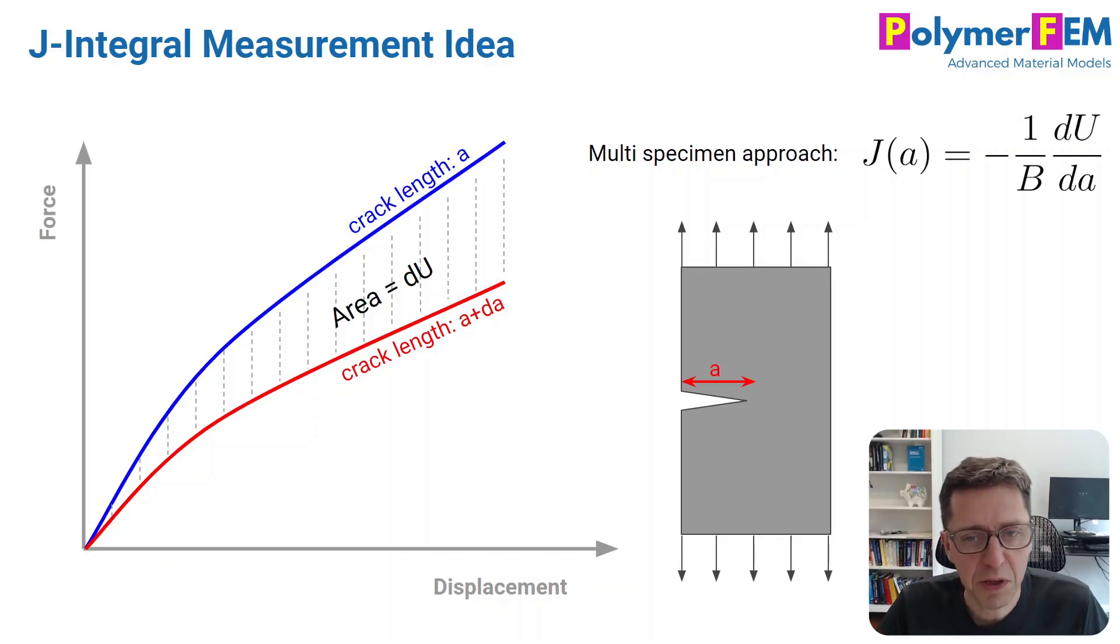Now say I have another specimen of the same material that has a slightly longer initial crack. So the crack is A plus dA, and I do the same force displacement test on that specimen. Since the crack is a little bit longer, it's softer in its response, the forces are lower, and we get the red curve here. The difference between these two curves is the energy that would be released if the crack were to grow.